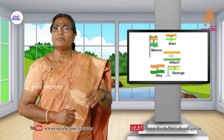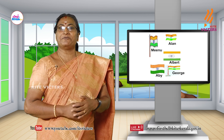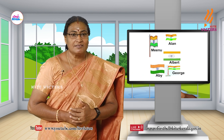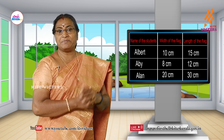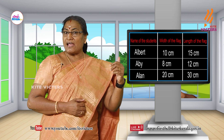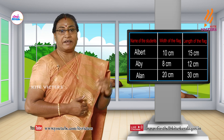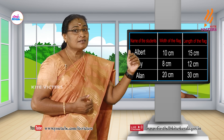Look at the measures of the flag. Is there any relation between the measure of the width and the length? Of course, there is a relation between the measures. The length is one and a half times the width. Let us see: the measure of the width of the flag that Albert made is 10 centimeter and its length is one and a half times of 10, that is 15 centimeter. Now, look at the width of the flag that Abbey made. The flag is 8 centimeter in width, and its length is one and a half times of 8, that is 12 centimeter.